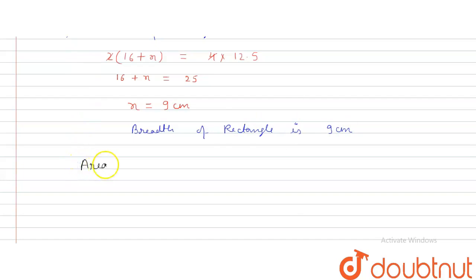Area of rectangle is equal to length times breadth. So what is the length? Length is 16 cm, and breadth is 9 cm. So this is coming 144 cm square. This is our final answer.